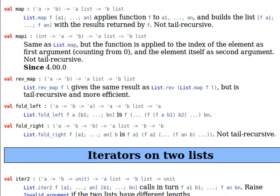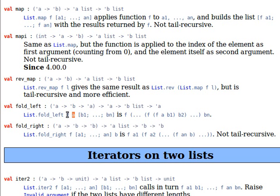Fold_left and fold_right — this is extremely important, extremely powerful, please pay attention and listen carefully. The fold_left function: we pass it a function f, we pass it a parameter a, and we pass it a list. What it does is the function will be applied to the first element of the list with that parameter, and then the result of that will be passed as an argument to the next run of the function on the second element of the list, and the result of that will be passed to the third run on the third element, and so on. We have f(a, b1), then that will come instead of a for the second element, so we have f(result, b2), and that continues.